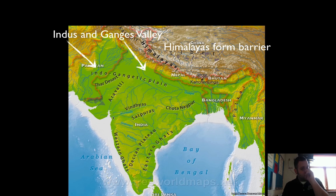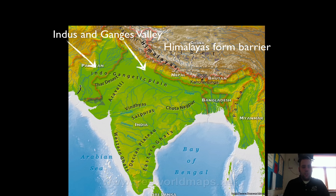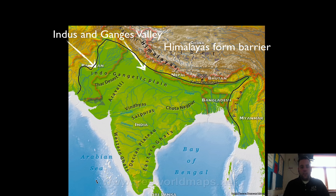Another natural barrier is the Himalayas, a mountain range located in the north of India. There's also a smaller mountain range to the west. Wherever it's a yellowish-brownish color is where mountains or higher lands are. These natural barriers exist for India to the north, east, and west. To the south, the natural barrier is water.